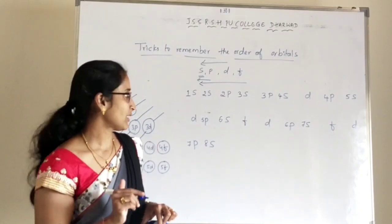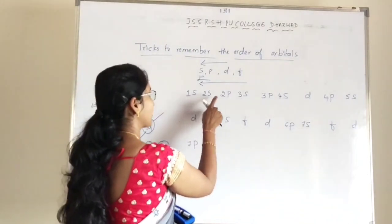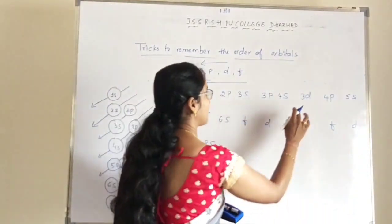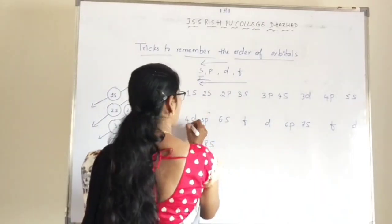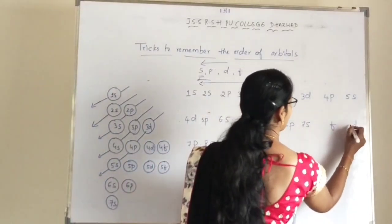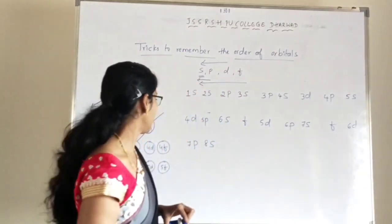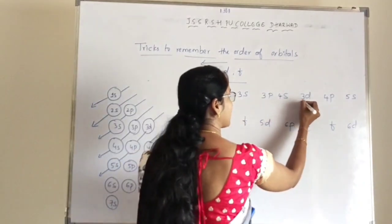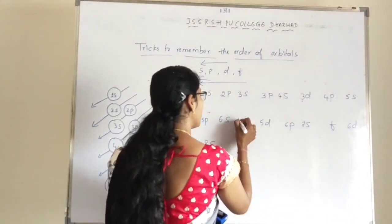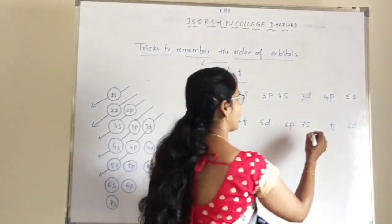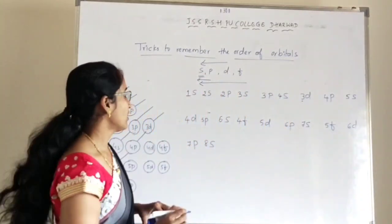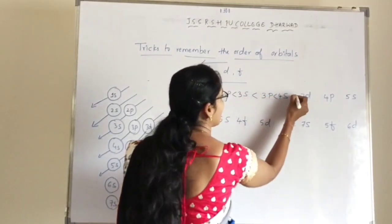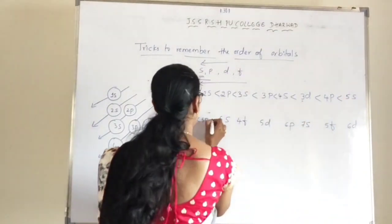For the D orbital, since 1 was taken for S and 2 for P, we start with 3 for D: 3D, 4D, 5D, 6D. For the F block, since D orbitals start at 3, we start with 4F. So the F orbitals are 4F and 5F. This gives the order of atomic orbitals in the increasing order of energies.